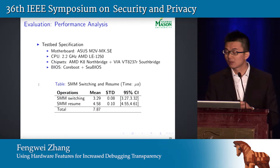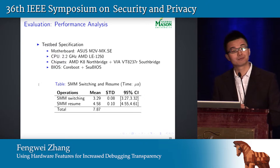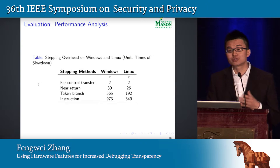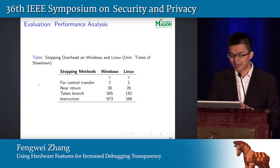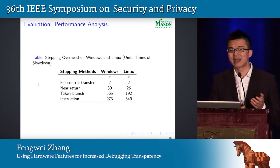To measure performance overhead, we implemented a prototype of our system. The table shows SMM switching and resume times: SMM switching takes about 3 microseconds and SMM resume takes about 5 microseconds, totaling about 8 microseconds — a fairly low overhead. We also measured the stepping overhead on both Windows and Linux platforms using different benchmarks, including a PI operation benchmark. We include four different stepping modes: far control transfer, near return, taking branch, and instruction-level. From the table, we can see that as we increase the granularity of the stepping modes, the overhead increases.